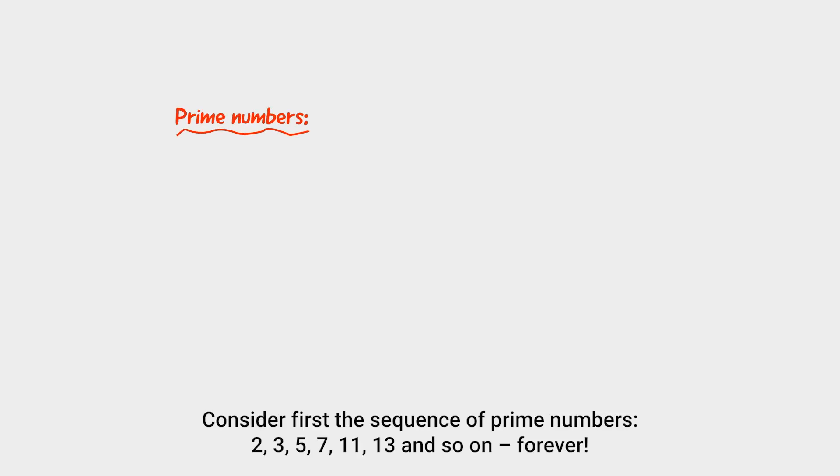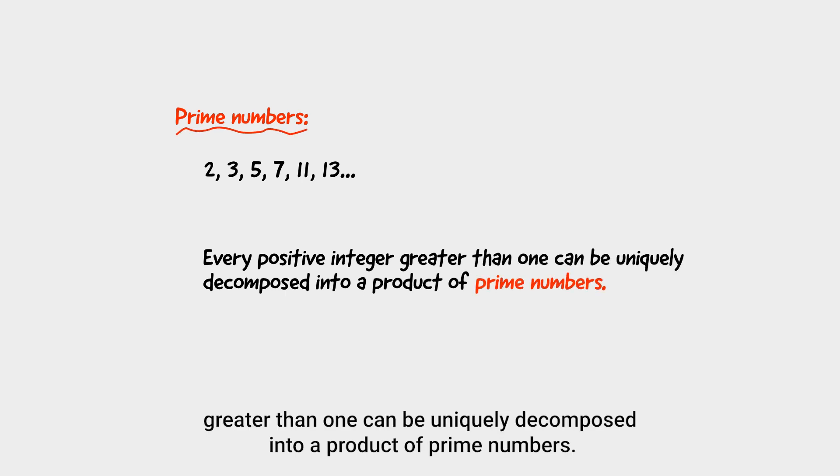Consider first the sequence of prime numbers: 2, 3, 5, 7, 11, 13 and so on forever. Every positive integer greater than 1 can be uniquely decomposed into a product of prime numbers.